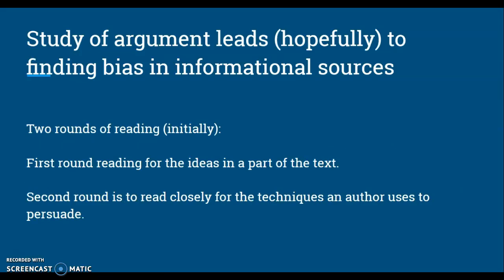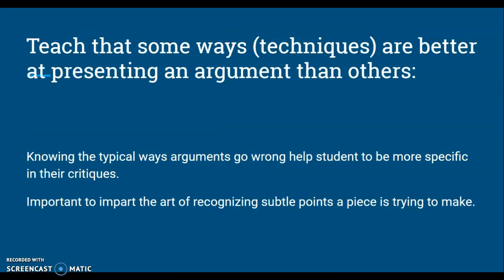The study of argument leads hopefully to finding bias in information. There are two rounds of reading initially: the first round, you read for the ideas in any part of the text; the second round, you read closely for the techniques an author uses to persuade. Then teach students that some techniques are better at presenting an argument than others. Knowing the typical ways arguments go wrong helps students to be more specific in their critiques, and it's important to impart the art of recognizing subtle points a piece is trying to make.